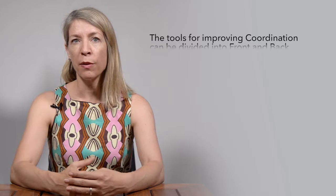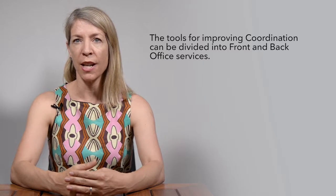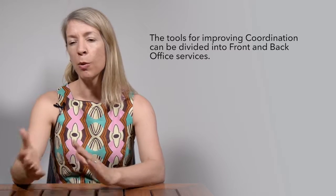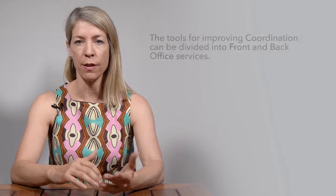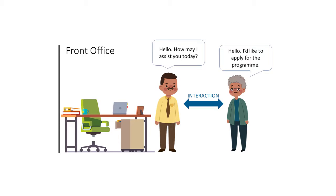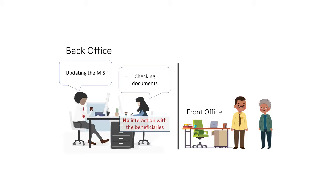The tools for improving coordination of social protection at the administrative level can be grouped into front and back office services. Front office services refer to any activities that involve an interaction with the beneficiaries, and back office services involve no interaction with the beneficiaries, such as integrating the management information system or the single registry.